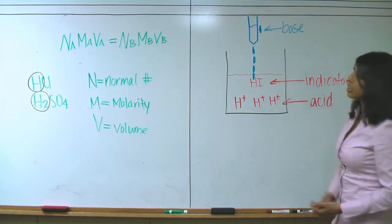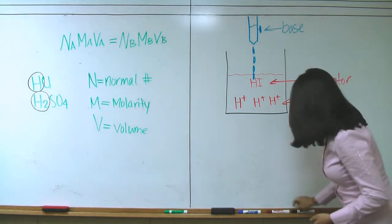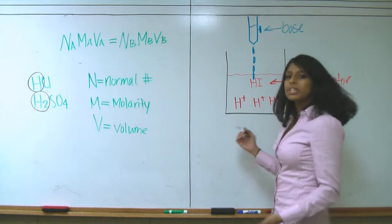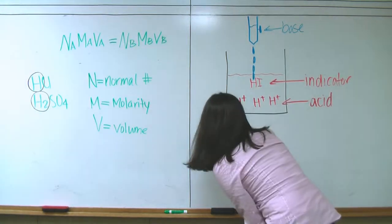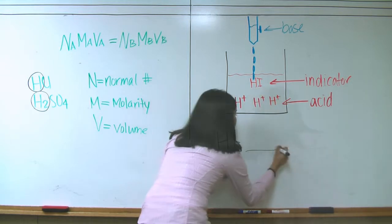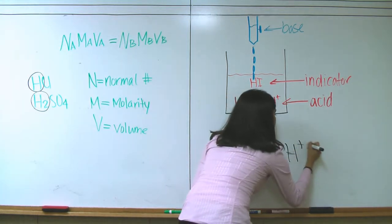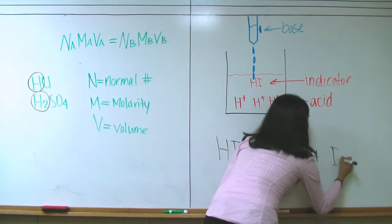As soon as our base touches our indicator, it dissociates the bond in that indicator. So, the equation is as follows: HI dissociates to H+ and I-.